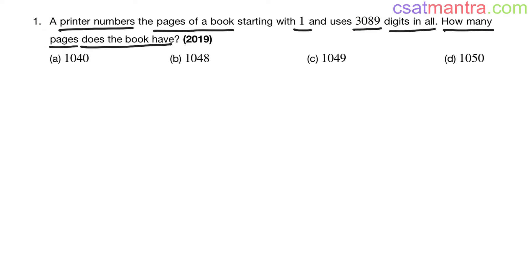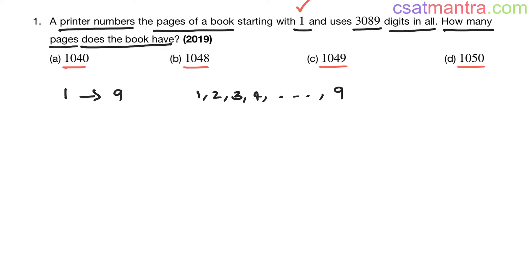From the options, there are more than a thousand pages in that book. Let's start from page number one. From page number one to page number nine, every page has a single digit — one, two, three, four, and so on up to nine. So total nine digits are there.